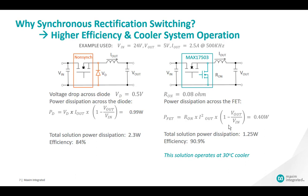What does it mean when synchronous rectification dissipates less power? It means the system runs cooler. In this example, the synchronous solution runs 30 degrees C cooler. Every 10 degrees C cooler in operating temperature doubles the life expectancy of the solution, so in this example the synchronous solution is expected to last eight times longer. When designing high reliability systems, pay close attention to operating temperature.